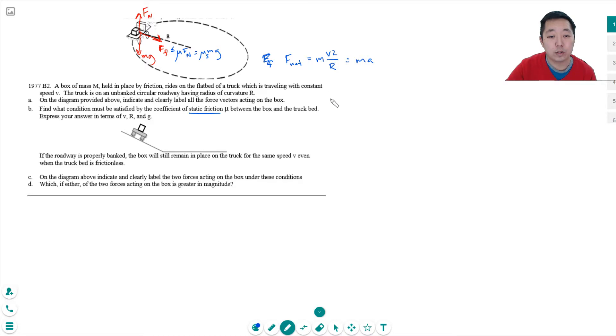So that means mu s mg has to be greater than or equal to mv squared over r. The m's cancel. So mu s has to be greater than or equal to v squared over gr. Because the net force here, this is a force of friction. And the force of friction can be only at most mu s mg.